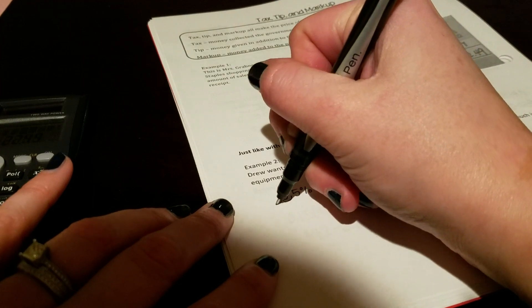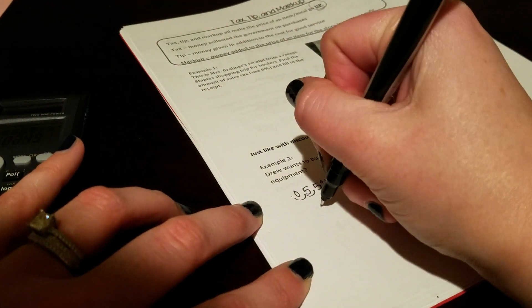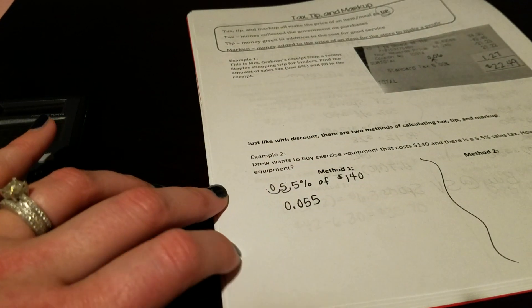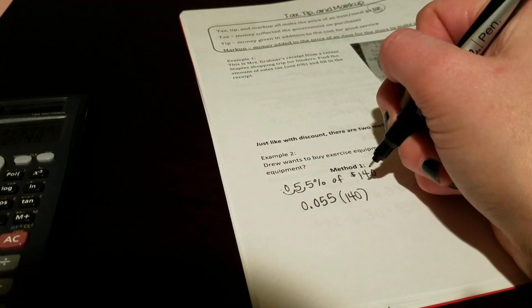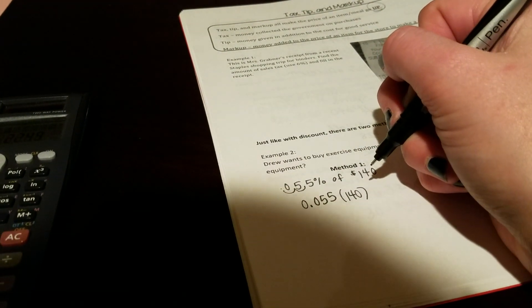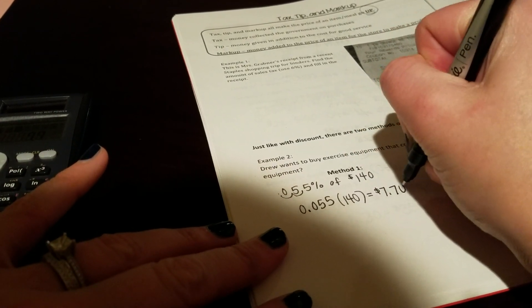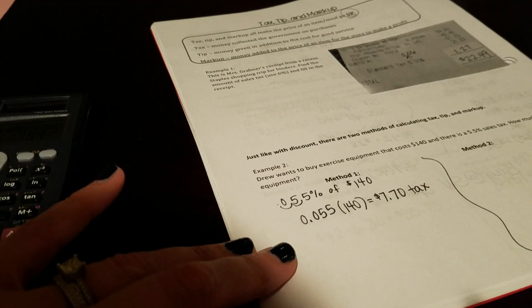Your percent, you need to move the decimal point two places back to the left. We have an empty spot, so we're going to have 0.055 will actually be our decimal times $140. And that will give us $7.70, and we're going to call this tax.